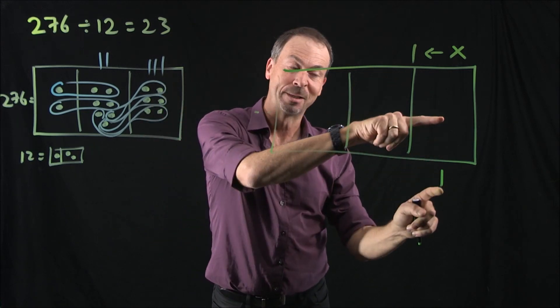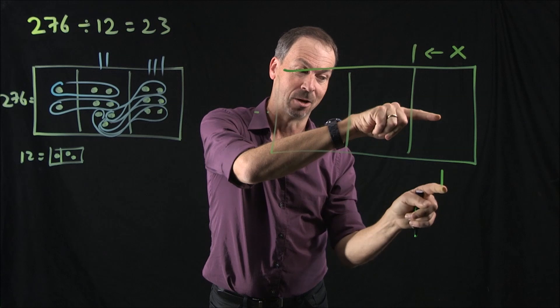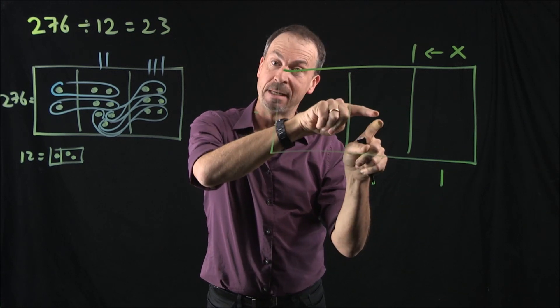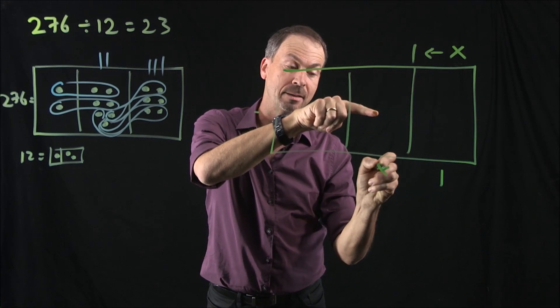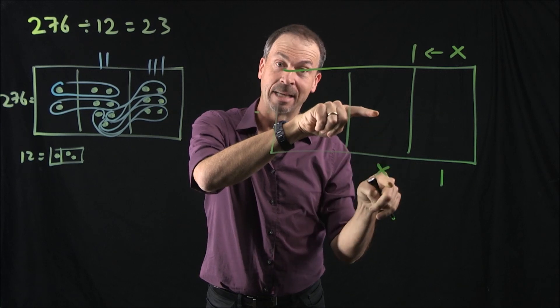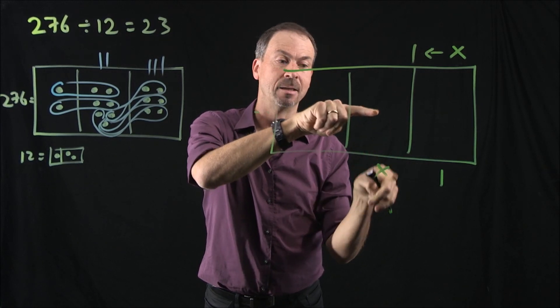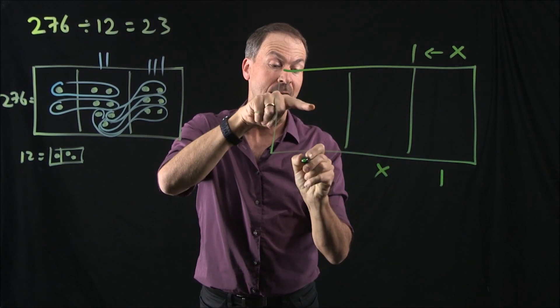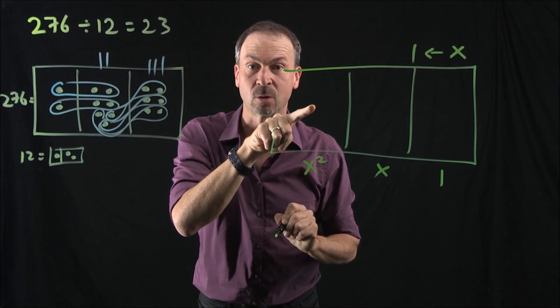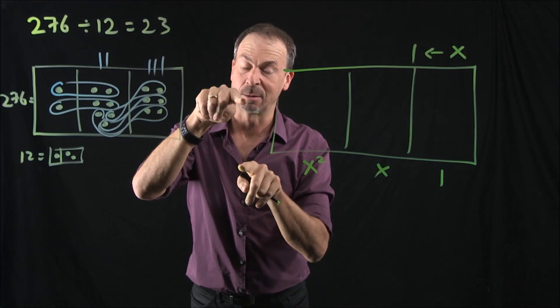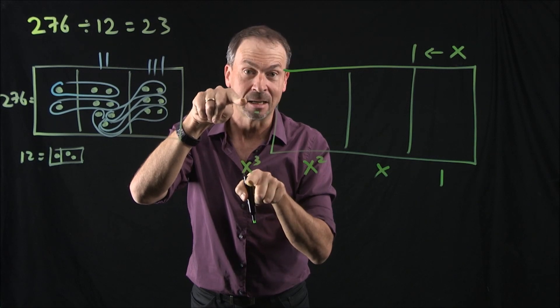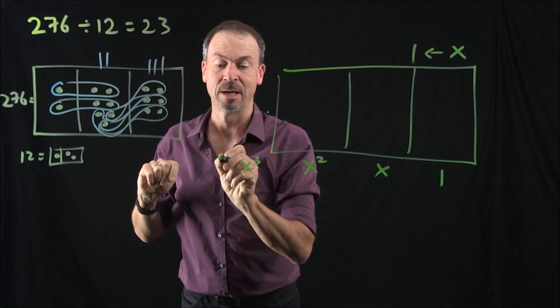But you do know dots here are always worth one. But you now know X of these dots, X ones, makes one of these guys. This must be worth X ones. And X of these, X times X, that's multiplication, makes one of those. This must be worth X squared. And X of these, X times X squared makes the next one over, X cubed. And X times X cubed makes one of those, X to the fourth, and so on.